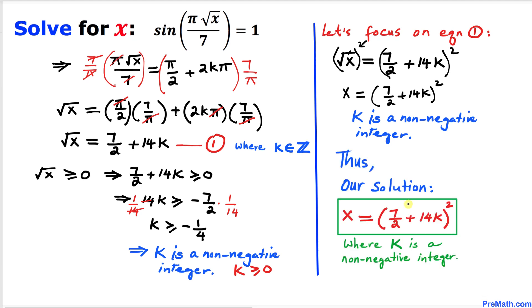Thus our final solution is x equals (7/2 + 14k)², where k is a non-negative integer. Thanks for watching and please don't forget to subscribe to my channel for more exciting videos.